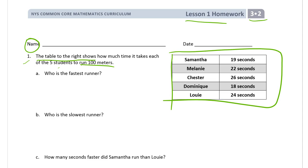A table is not a piece of furniture. It's organized in rows and columns, and sometimes it has titles for each column or for the rows, but this one doesn't. You can see Samantha and her time, Melanie and her time, Chester and his time.